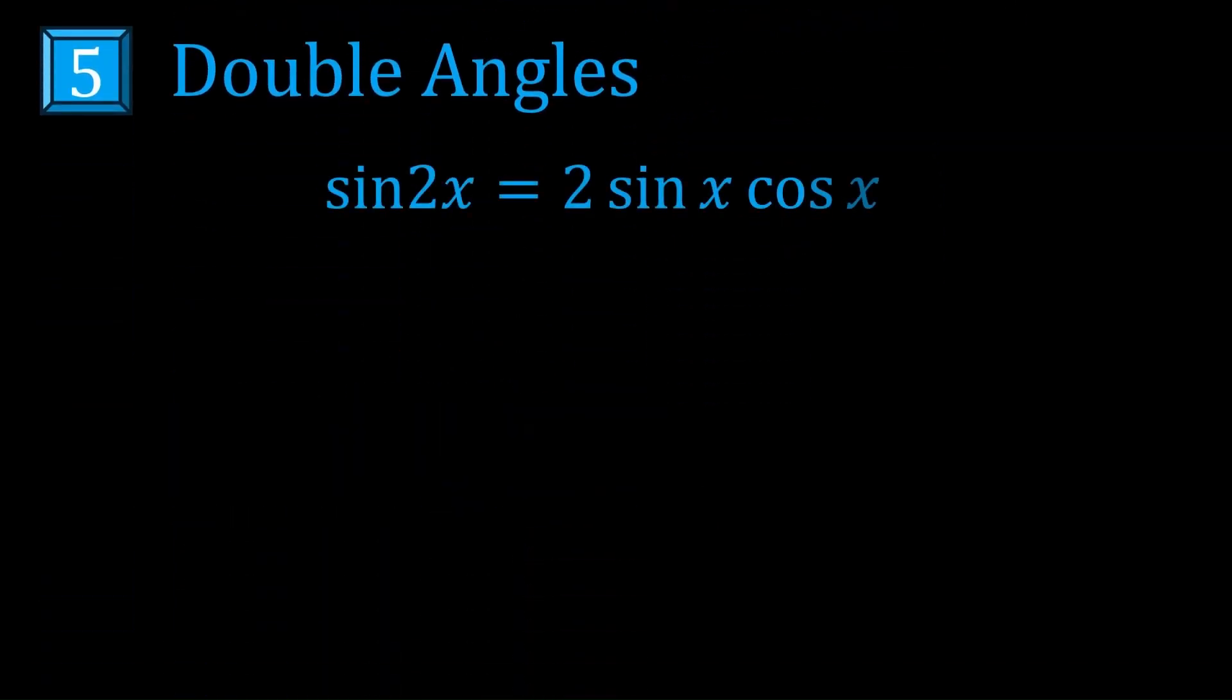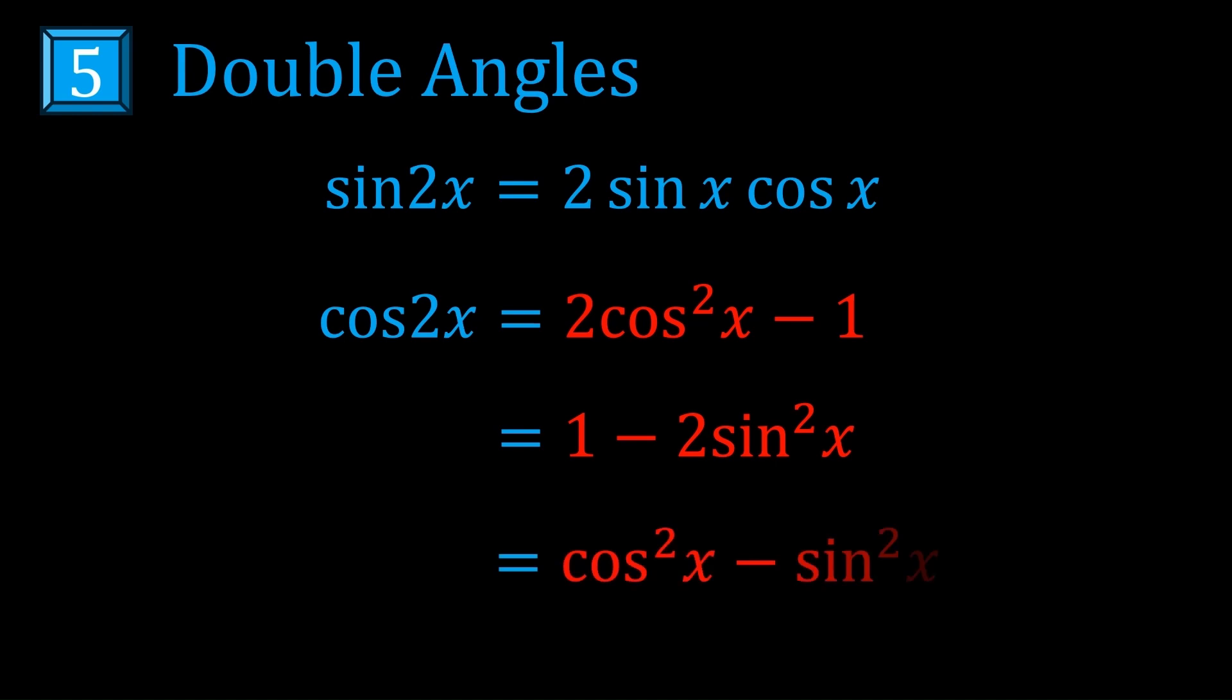At number 5, we have double angle. Everyone knows sine 2x and cos 2x, but you really should memorize all three forms of the cos 2x one. The second and third forms follow from the first one, just by the Pythagorean identity, but I wouldn't bother proving them each time, because that way you can get fast at solving more hard problems.